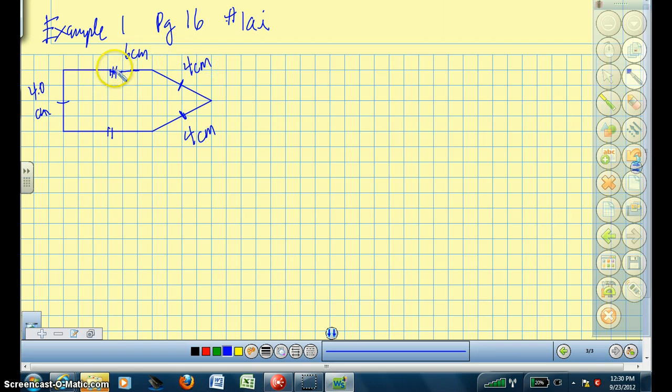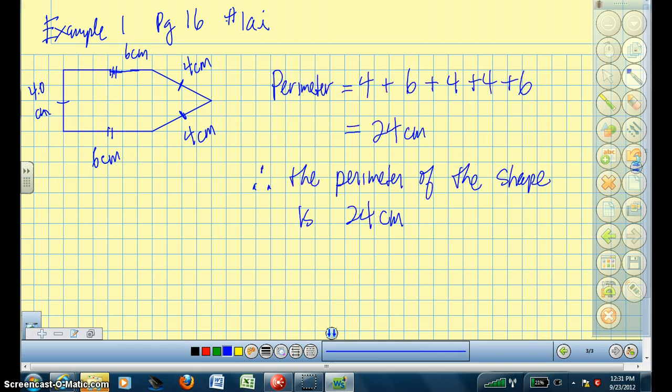And the double hashed lines mean that these two sides are equivalent. So that means this side down here on the bottom is also 6 centimeters. So now that we have all the information for the dimensions of all the lengths of this shape, in order to calculate the perimeter, we simply have to add up all the different lengths around this shape.